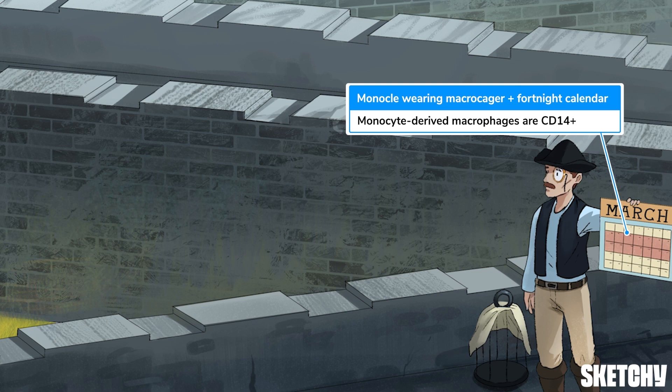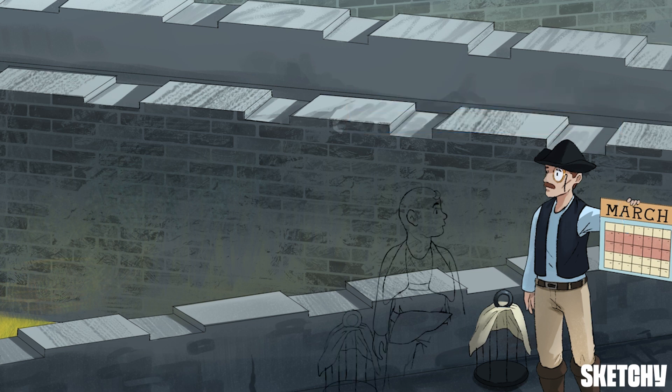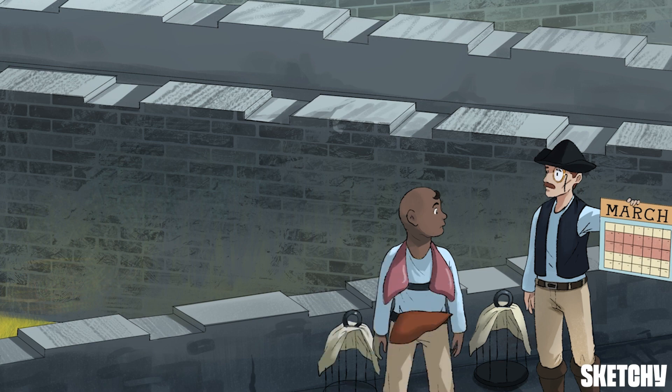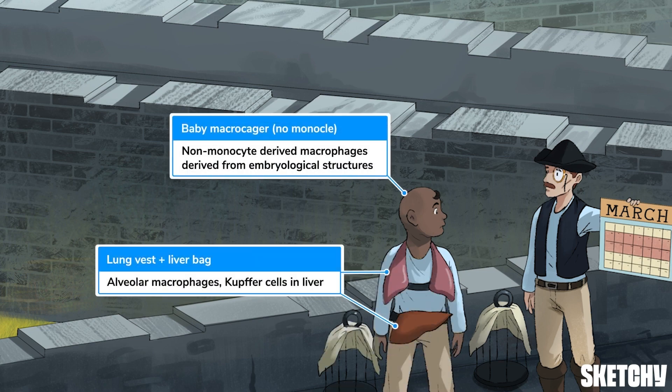We don't just teach you science here at Sketchy! As opposed to monocyte-derived macrophages, non-monocyte-derived macrophages are derived from embryological structures, so we've drawn in a baby-faced macrocager without a monocle to remind you of this. Some examples are Kupffer cells in the liver and alveolar macrophages in the lungs, denoted with this little man's lung vest and liver bag.